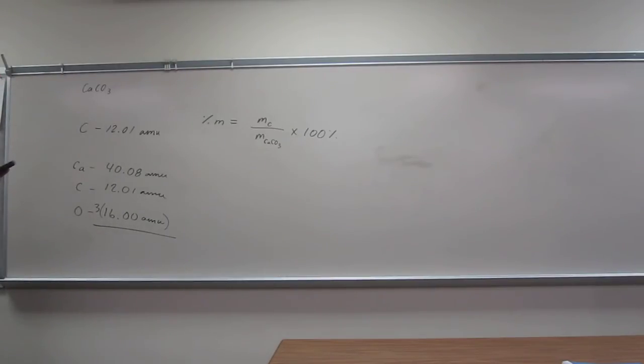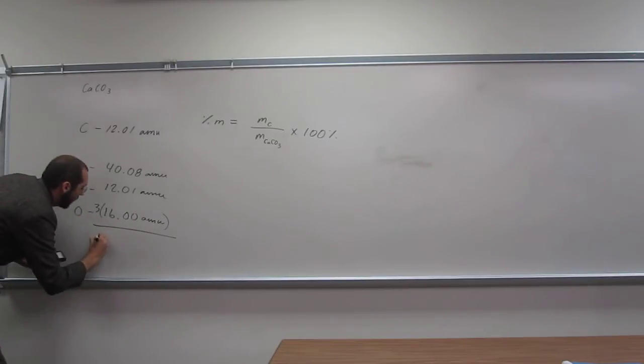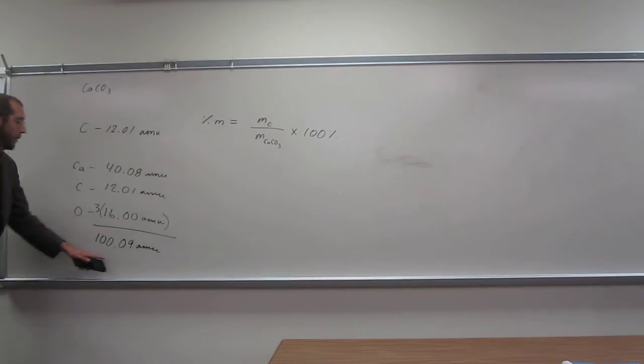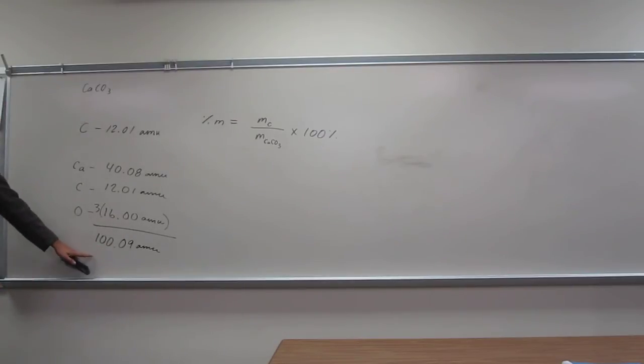So 3 times 16, plus 12.01, plus 40.08, and I get 100.09 amu. So is that the right number of sig figs? Even though it's five sig figs and every one of our numbers here has four? Yes, it is. Because it's the two numbers after the decimal that's important.